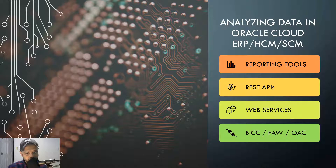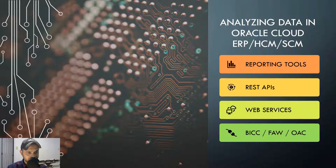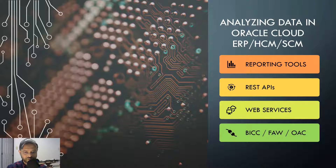Before we look at the tool, let's look at some of the options we have for analyzing or extracting data out of Oracle Cloud ERP, HCM, or SCM modules. The first category is reporting tools: BI Publisher, OTBI, Smart View, FRS reports, HCM Extracts. Then you have REST APIs, web services, and PaaS offerings like BICC, BI Cloud Connector, Fusion Analytics Warehouse, Oracle Analytics Cloud, etc.